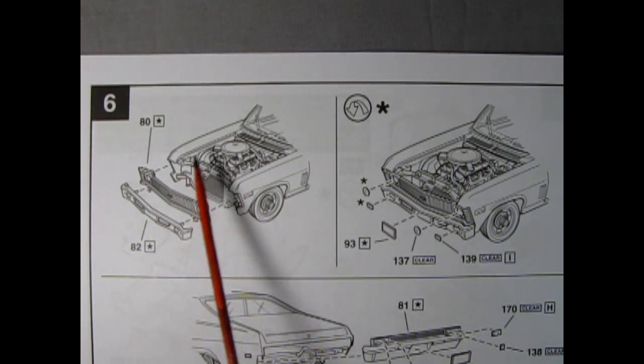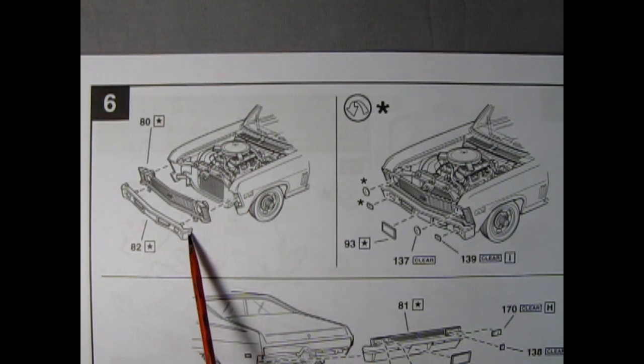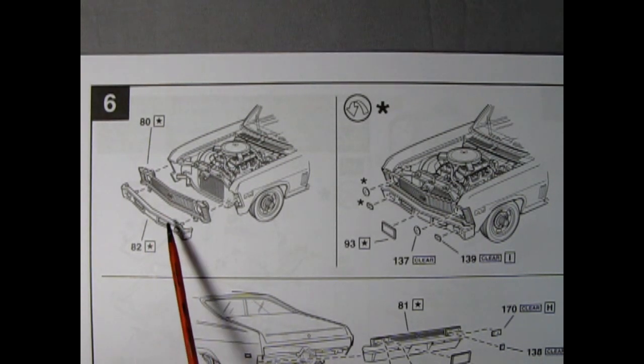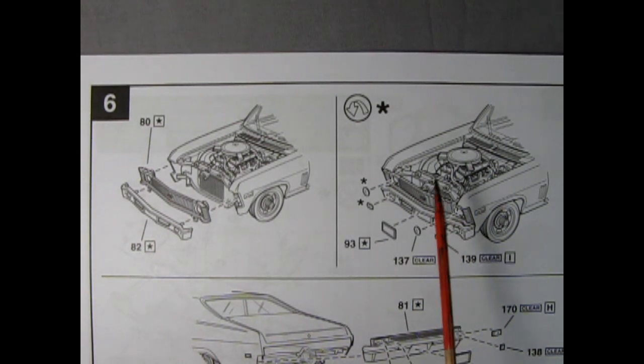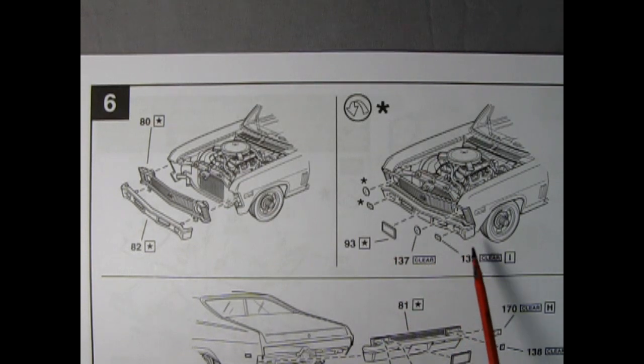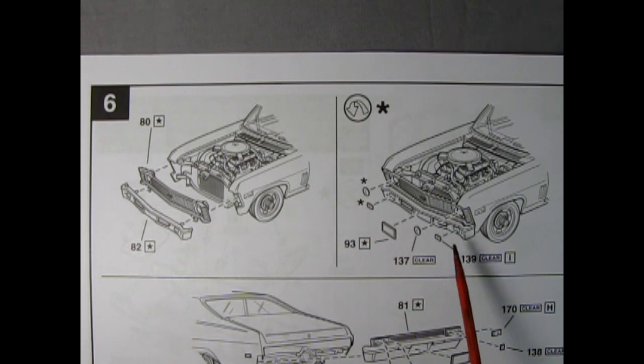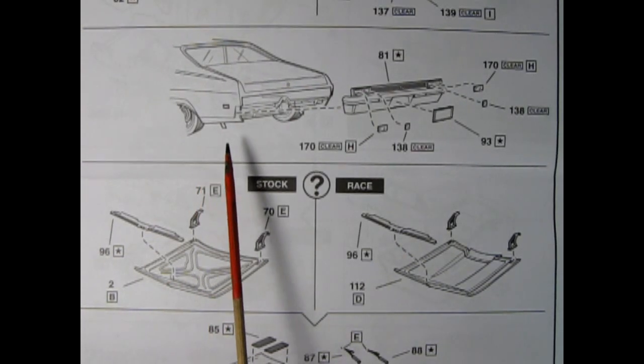Panel 6 shows the assembly steps for the front end of your Nova. First we start with the grille and we install that onto the front fenders and install our bumper into the little holes underneath the grille. Coming over here we now add in all our glass components: the headlights, the side marker lights, as well as the license plate being glued right in here.